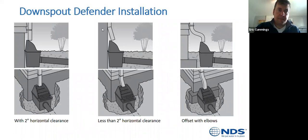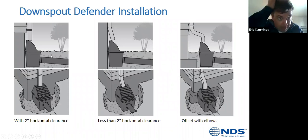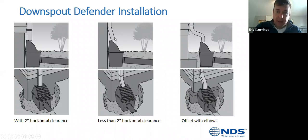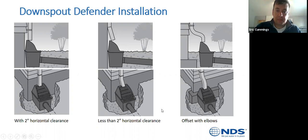For downspout defender installation, if you're right up against the foundation, it can drop straight off the gutter into the downspout. You can also do it with a simple angle on the end of the downspout. If you're dealing with a foundation underneath, you may need to put a sweeper or return in order to line up properly with the downspout defender.